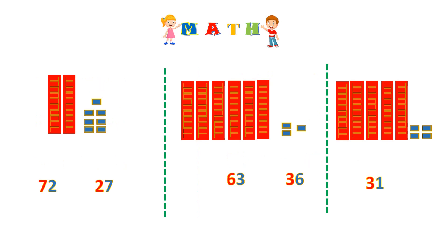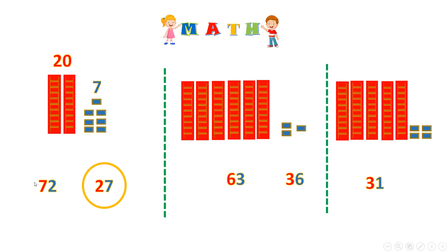Now let's have a little quiz. I want to circle the right answer. Let's start by counting the tens: 1 ten, 2 tens. 2 tens are 20. And for the ones, let's count: 1, 2, 3, 4, 5, 6, 7 — 7 ones. Now 20 plus 7 — is it 72 or 27? Great, it's 27! We have 2 tens here — that's the digit of tens — and 7 ones. It's not 72, because 72 is made of 7 tens and 2 ones.